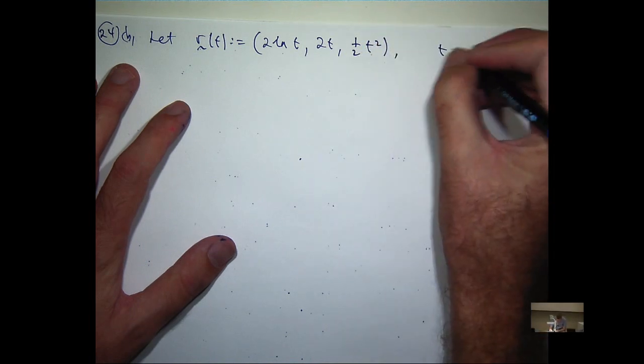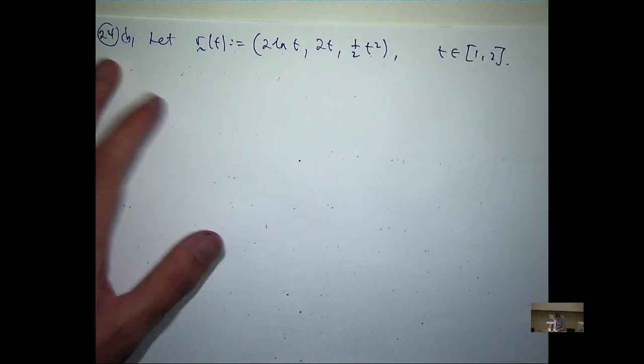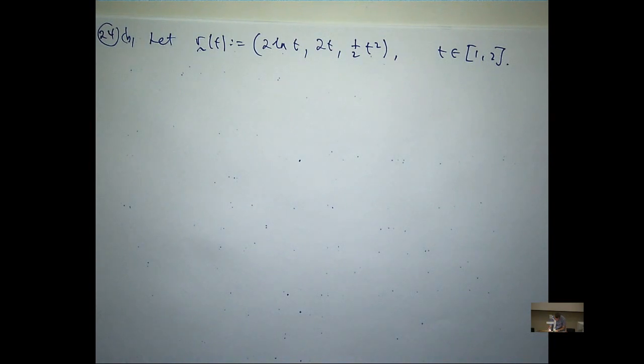And t is between 1 and 2. Now it's not clear what kind of curve that is, but we don't really have to worry about that. Unless it's a really obvious curve, we don't really need to worry about it.